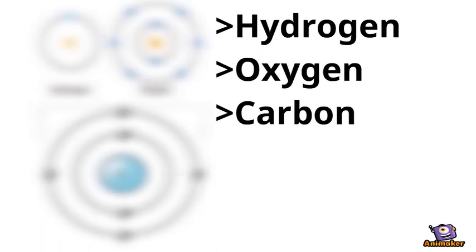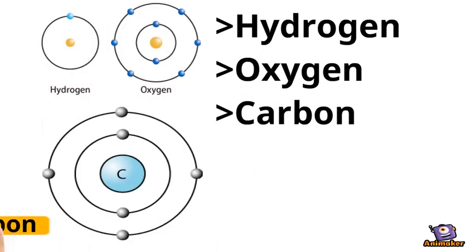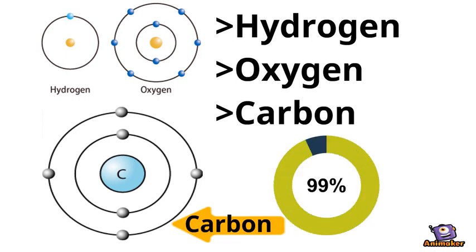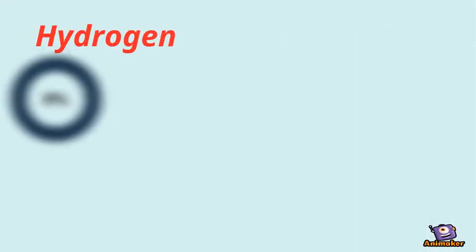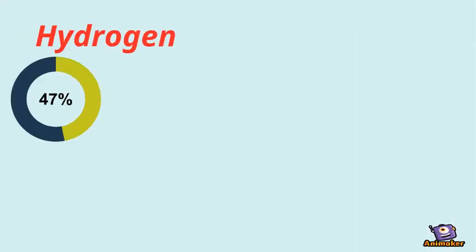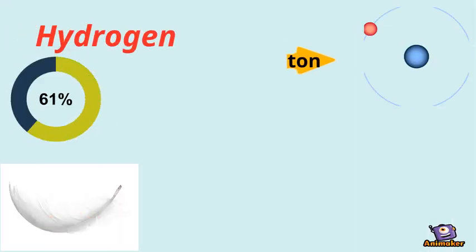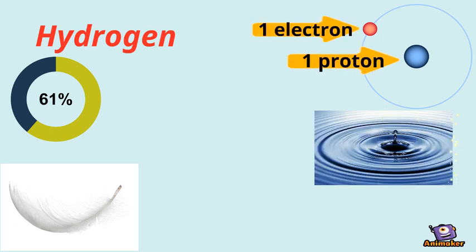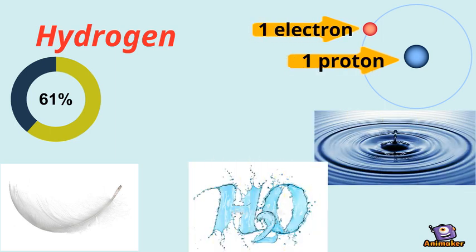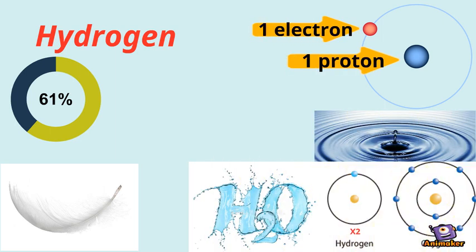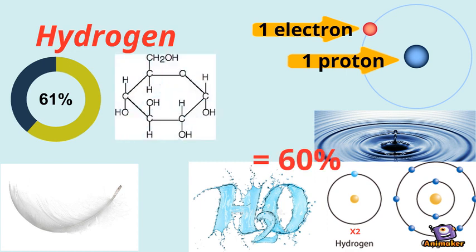These three elements make up ninety-nine percent of the total atoms in our body in terms of numbers. Hydrogen, the most abundant element, equates to sixty-one percent of all atoms in the body. It is the lightest element in the periodic table, has one proton and one electron, and is found in water (H₂O), which makes up sixty percent of the body. It's also found in organic molecules such as glucose.